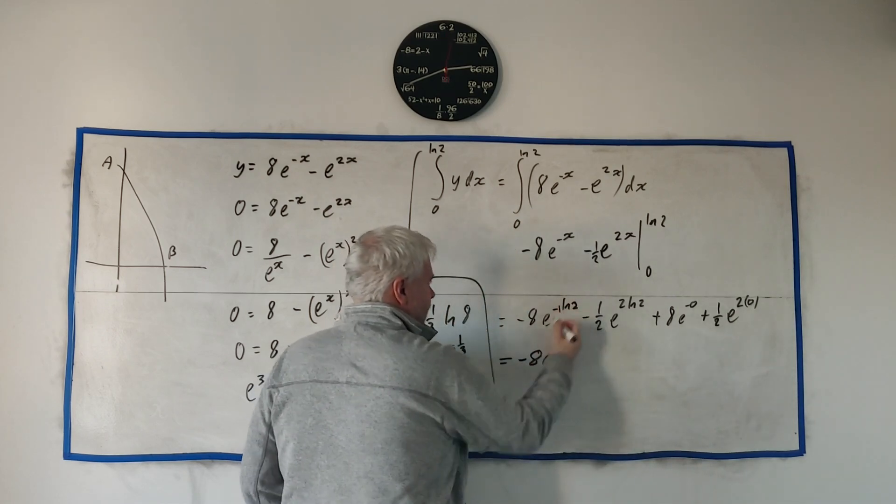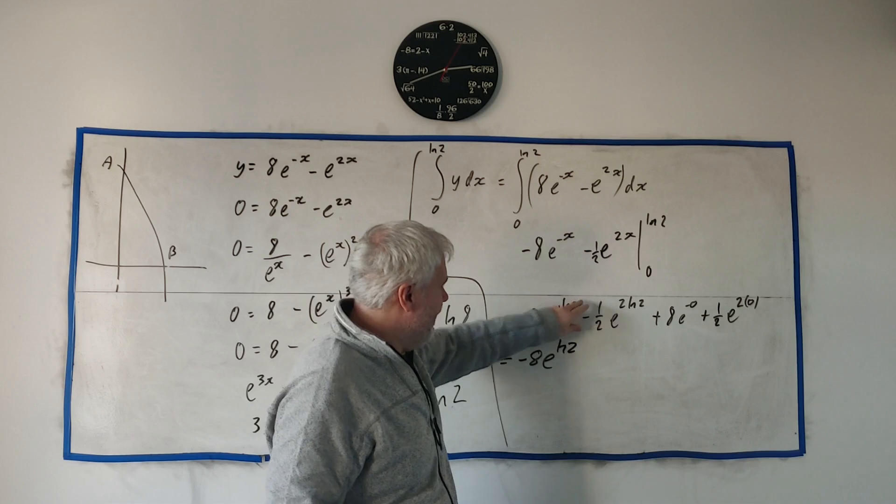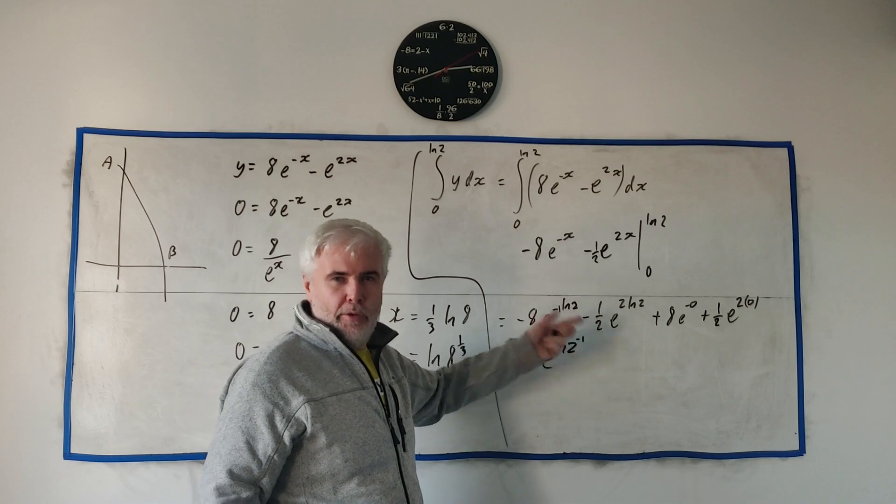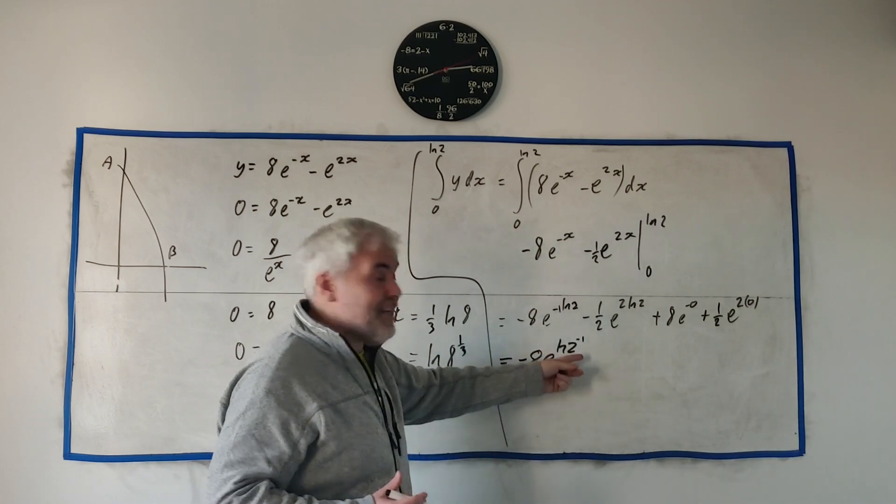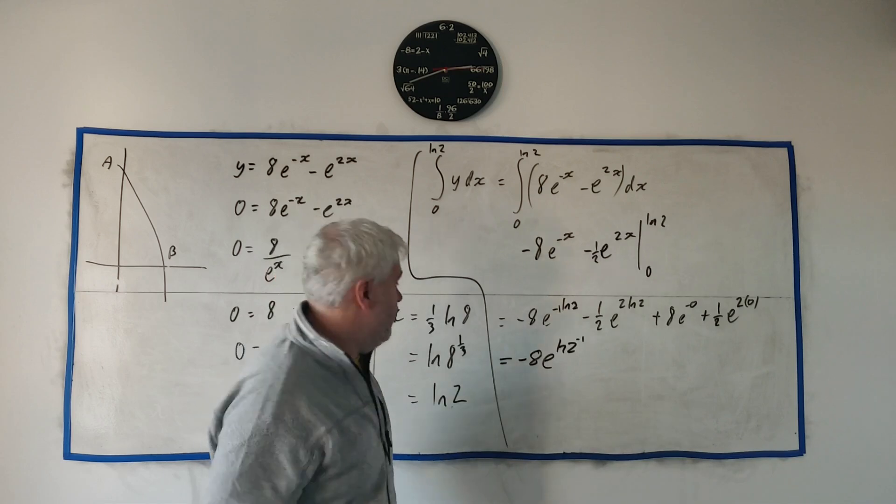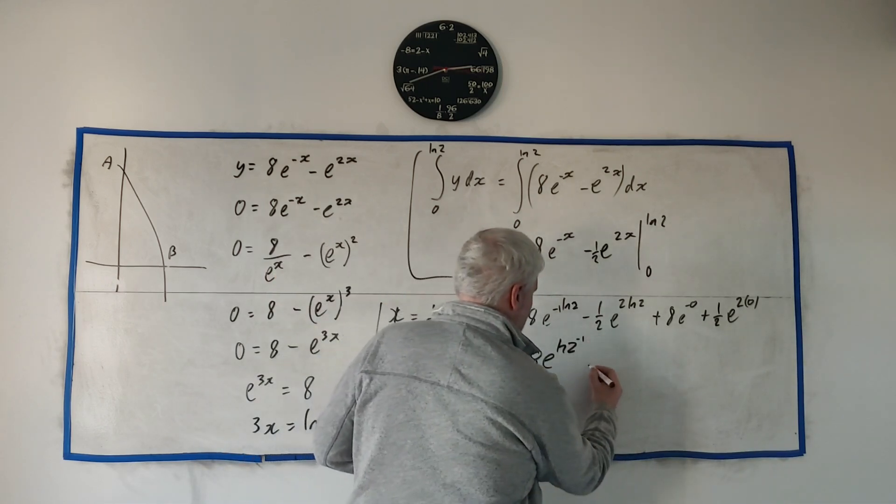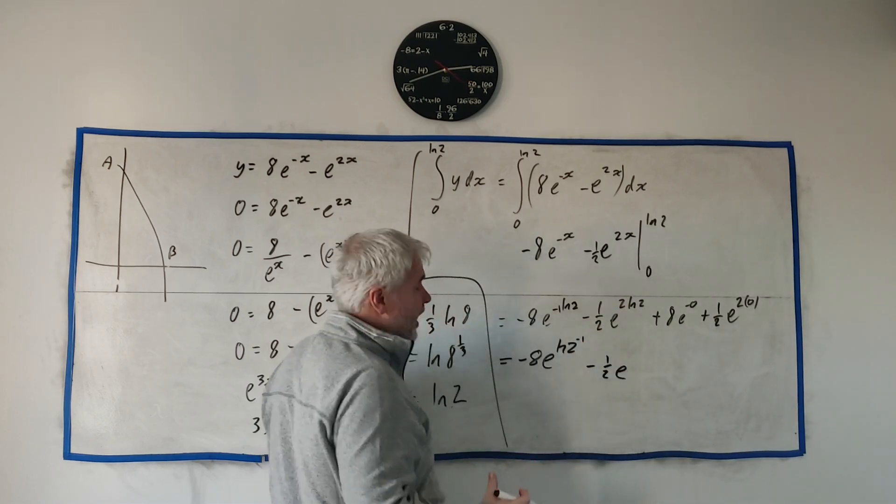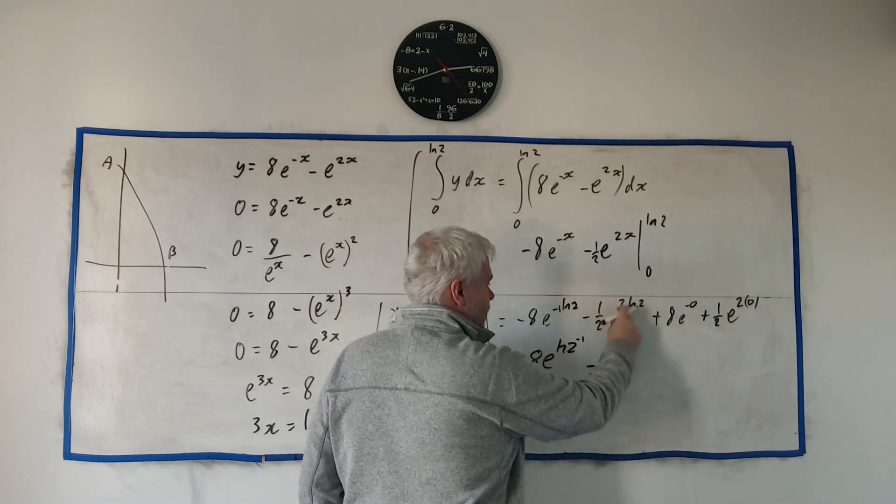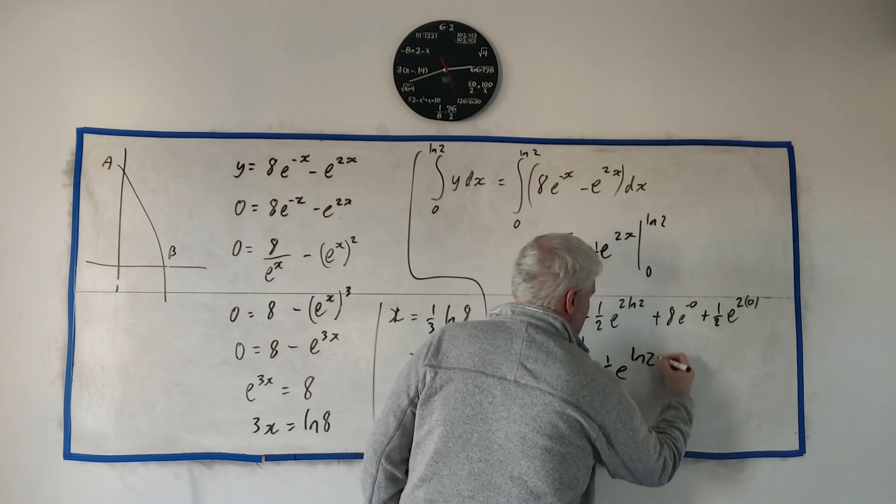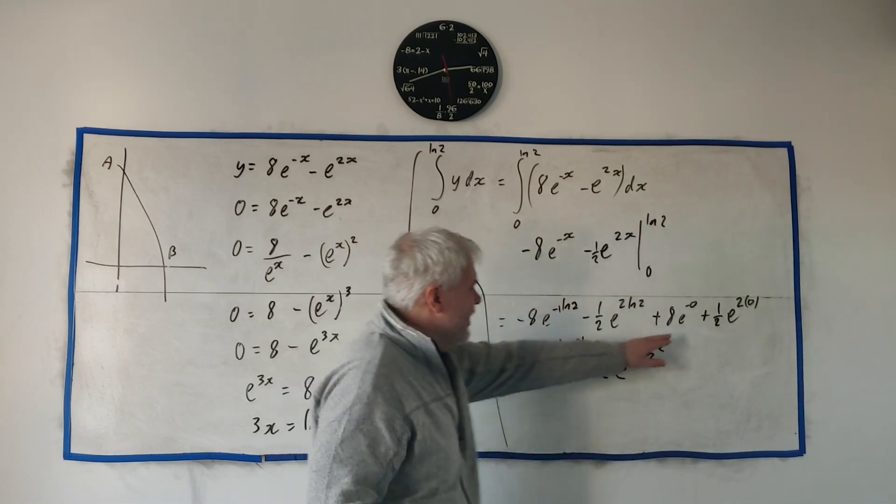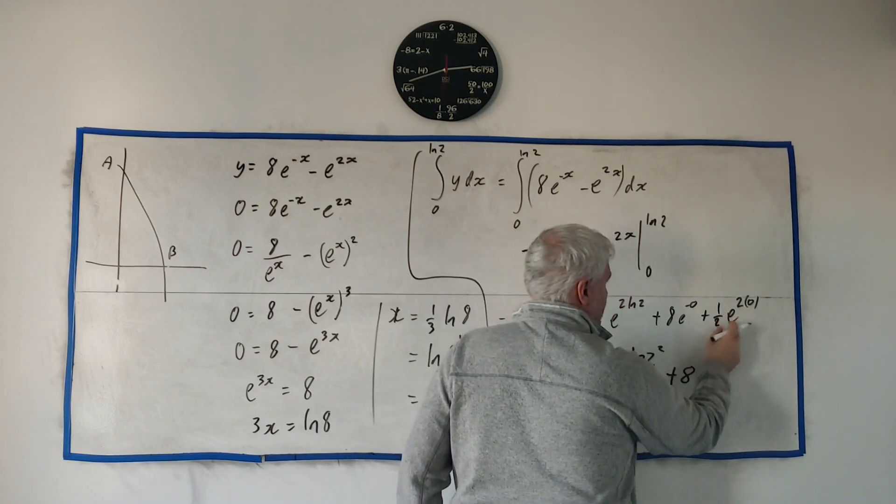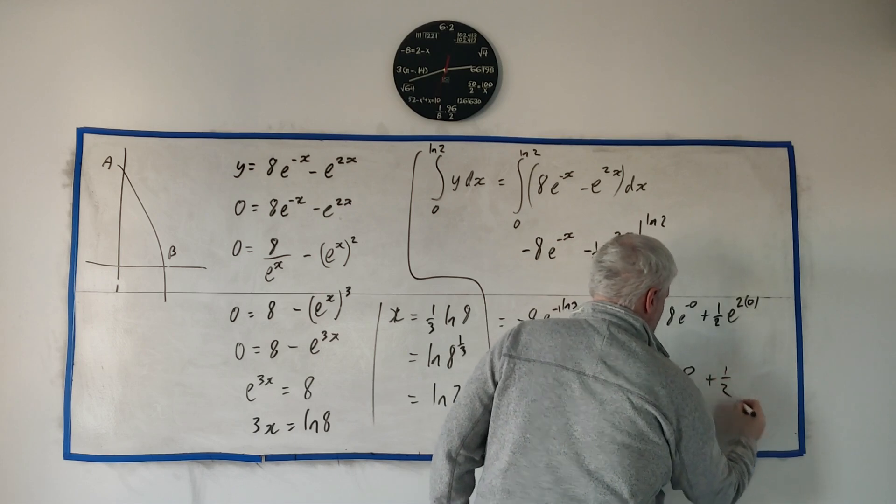We need to change this up to 8 times e to the natural log 2. Remember, this is a minus 1 here. Remember what multiplying does, it comes in and goes to the power of it. So it's 2 to the power of minus 1, which is a half. Same thing here, we get minus a half e. The e and the natural log can't cancel yet. We need to move this 2 and that 2 will move in and we get 2 to the power of 2. These guys we can start doing. That's just 1, that's just 1 times 8, that's just 1 times a half.